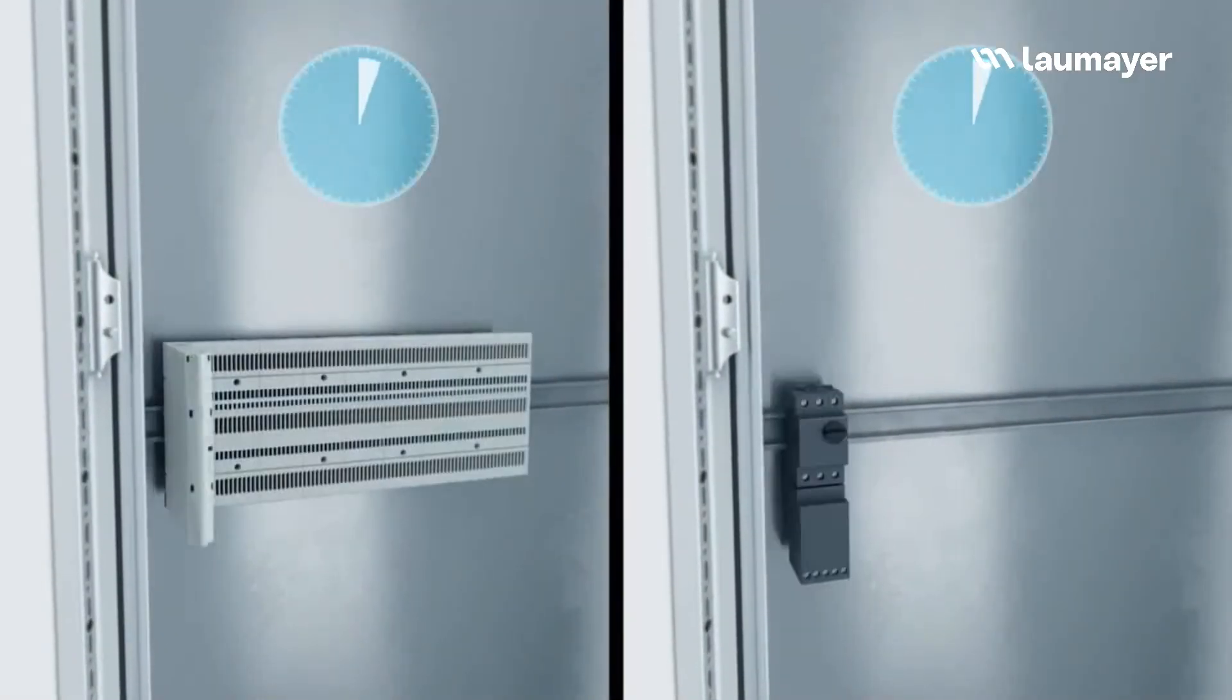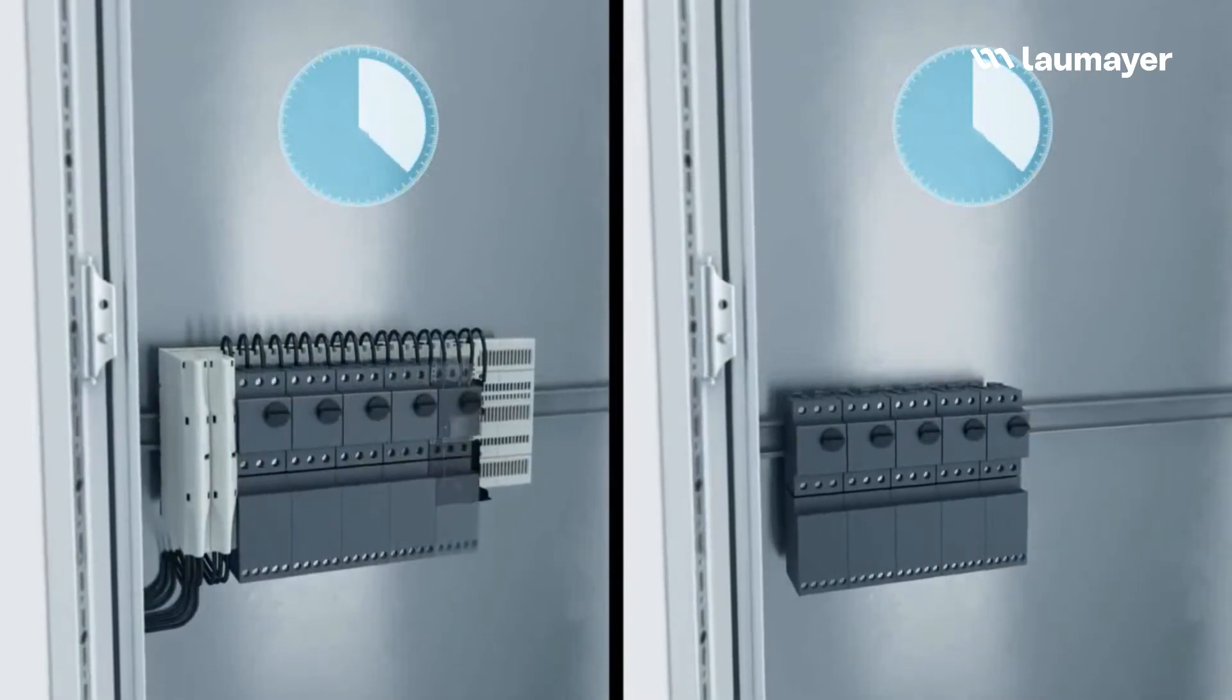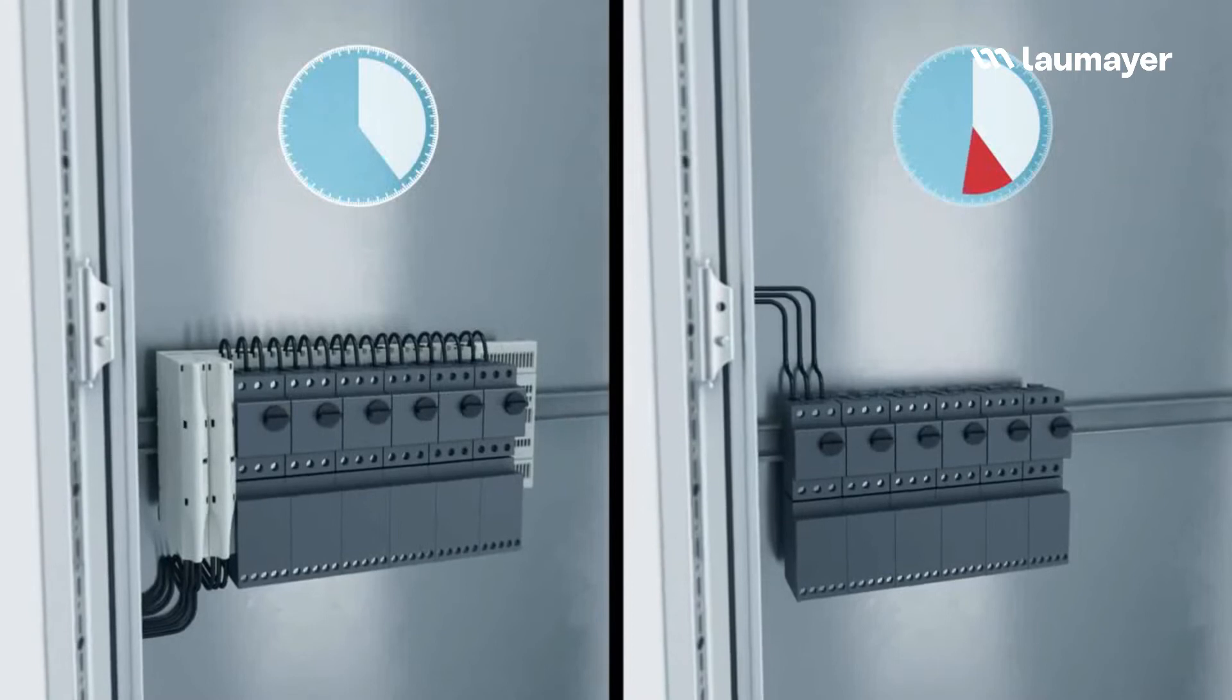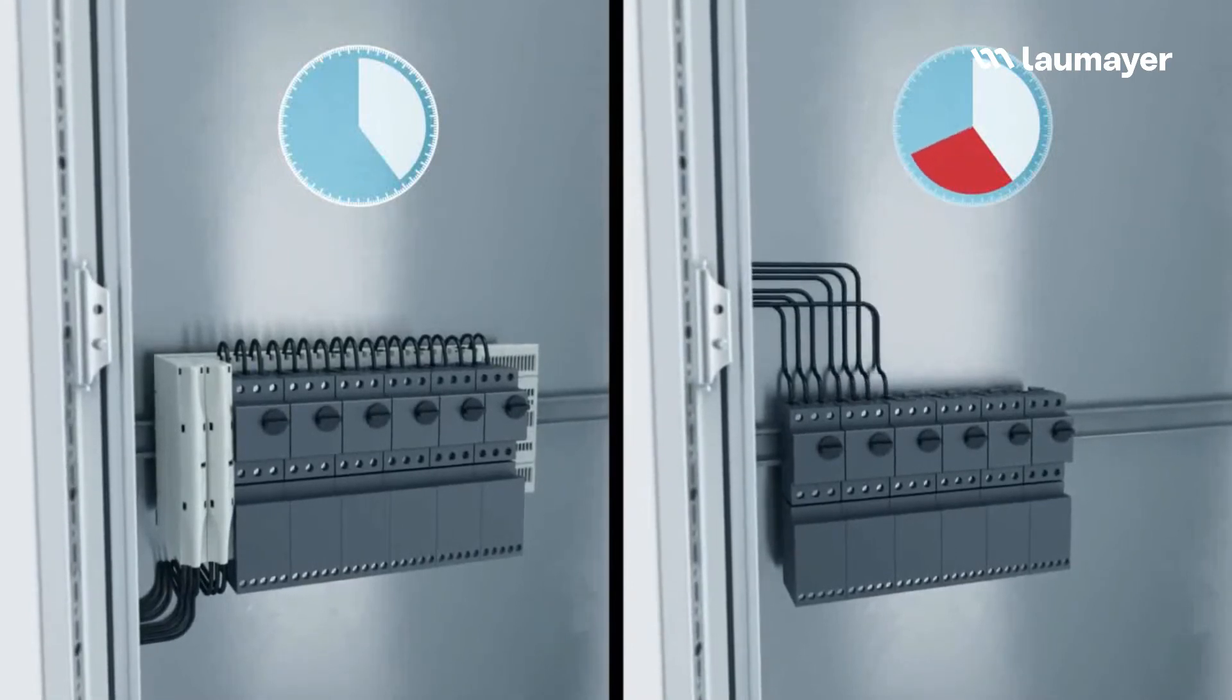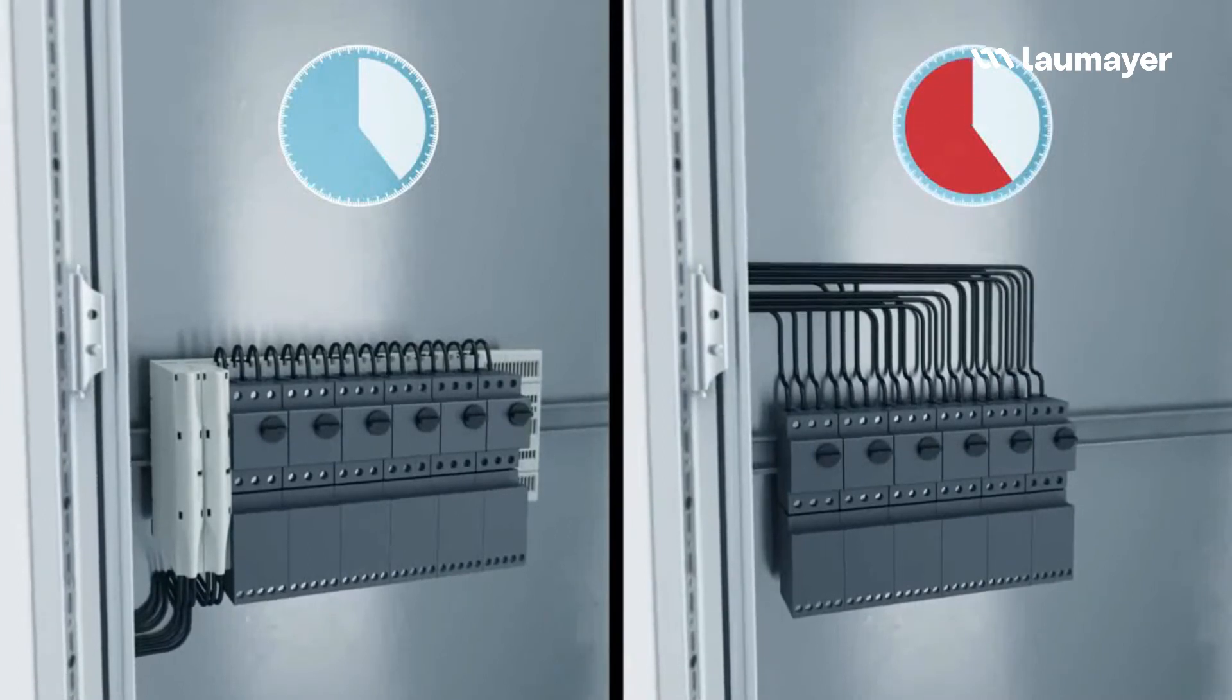The user saves time when installing a power distribution system with the Cross Board. Compared to a system with direct wiring and contacting via comb type bus bars, installation is completed significantly faster.